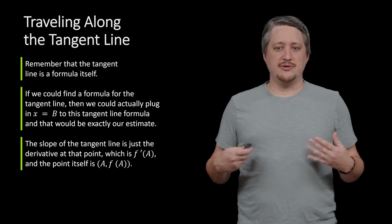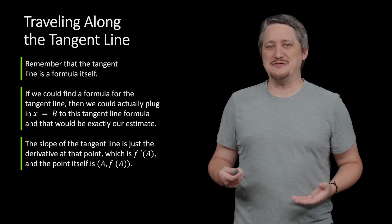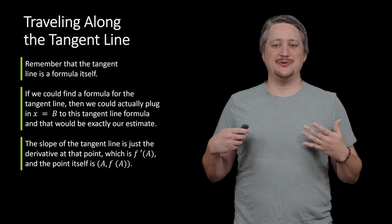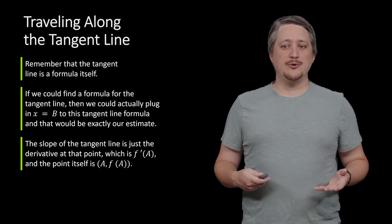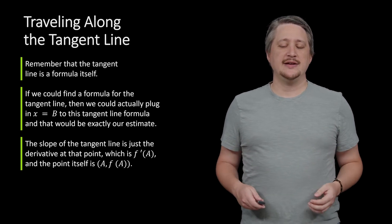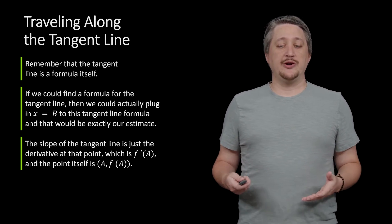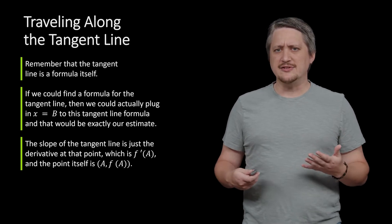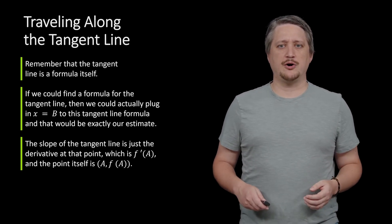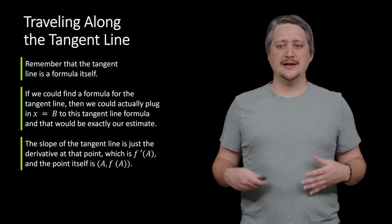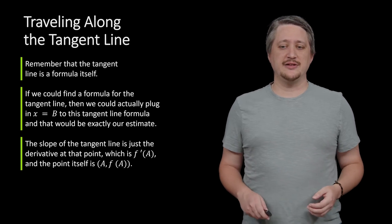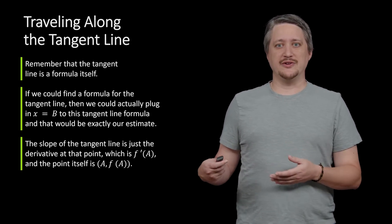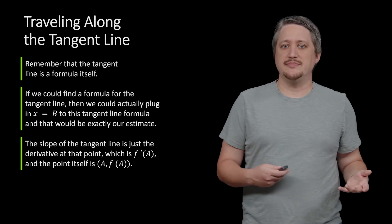As a refresher: the slope of a tangent line requires the derivative at that point, so f prime of A, and we need the point itself, which is just (A, f(A)). In the case of our square root example, A is 9, so we need f prime of 9, and our point would be (9, sqrt(9)), which is (9, 3).